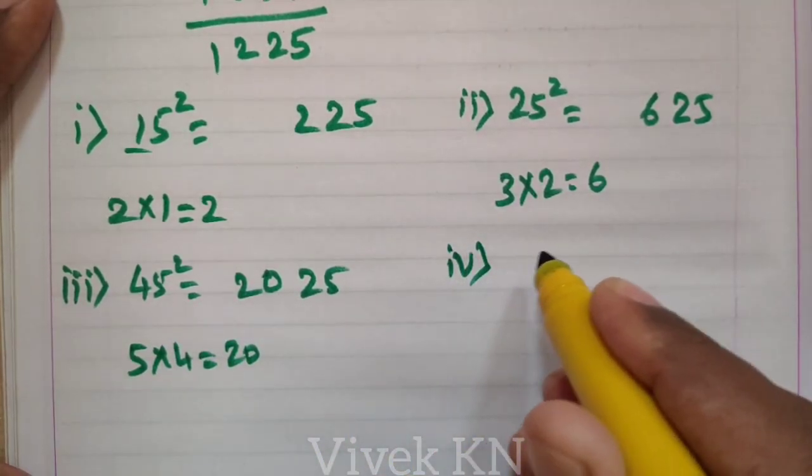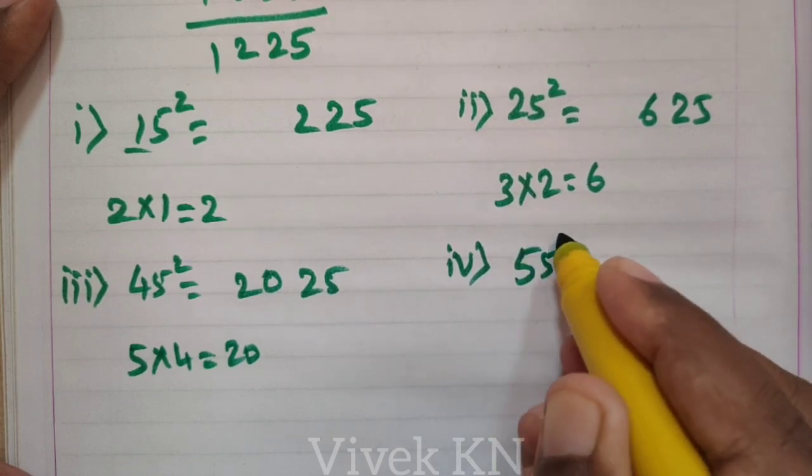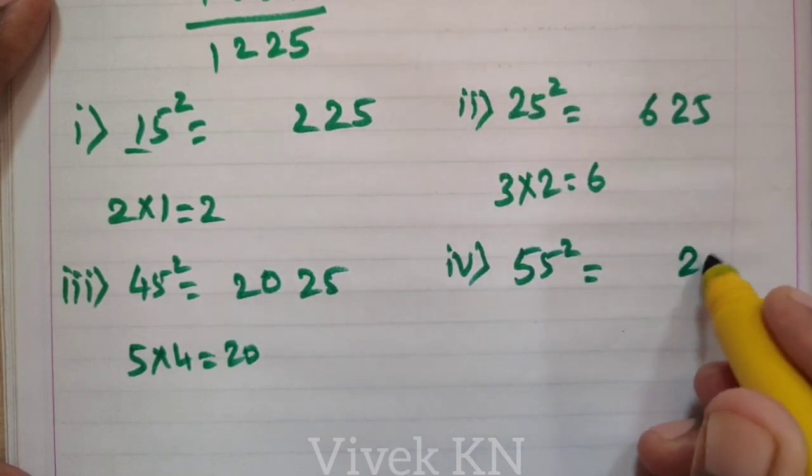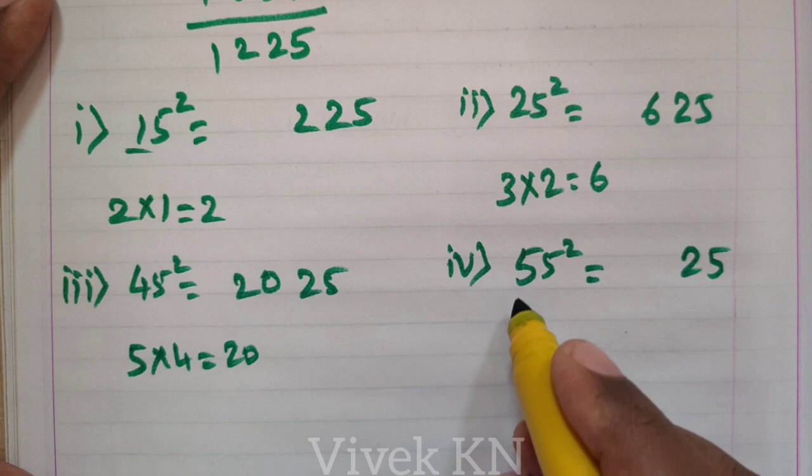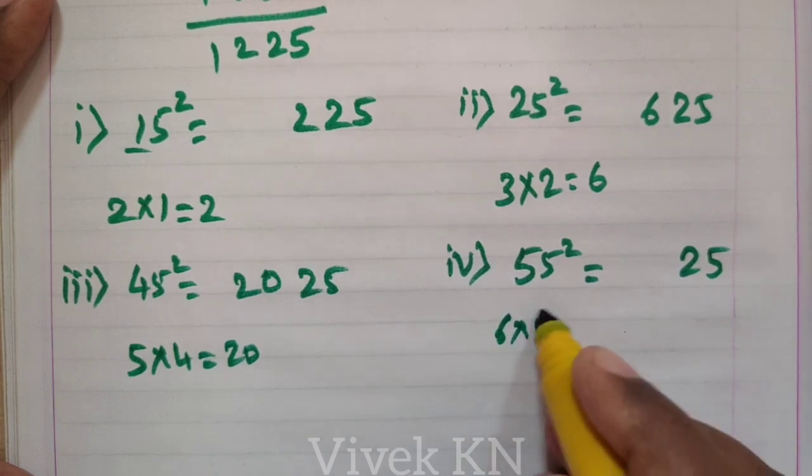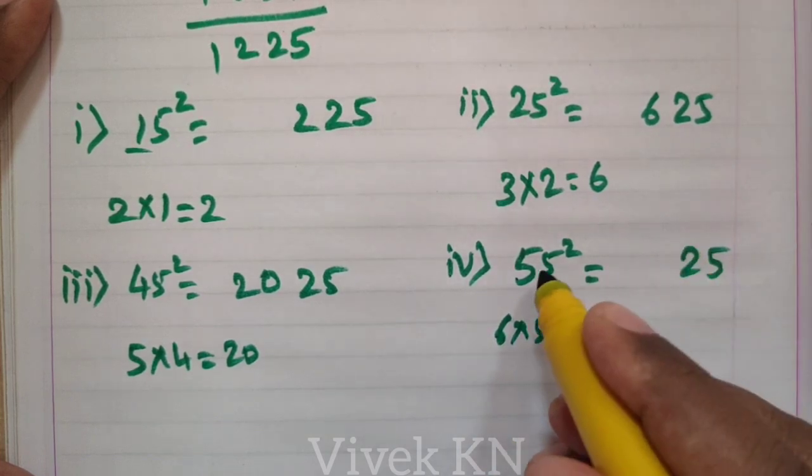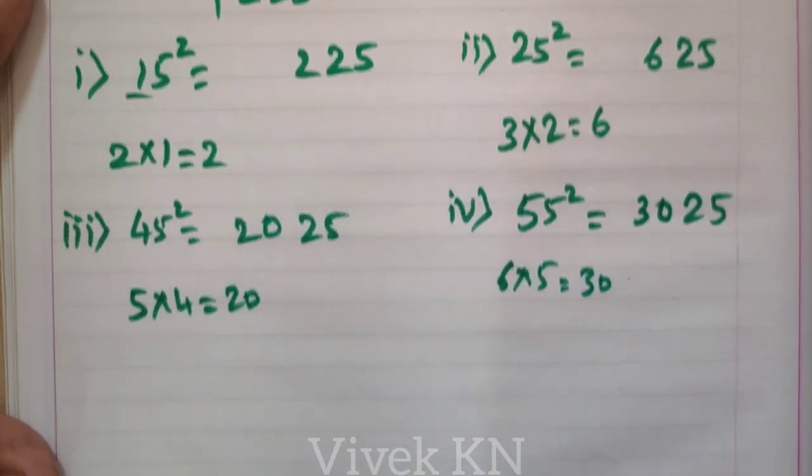Next, 55 square. 5 square is 25. The number that comes after 5 is 6. 6 into 5 equals 30. So, 55 square is 3025.